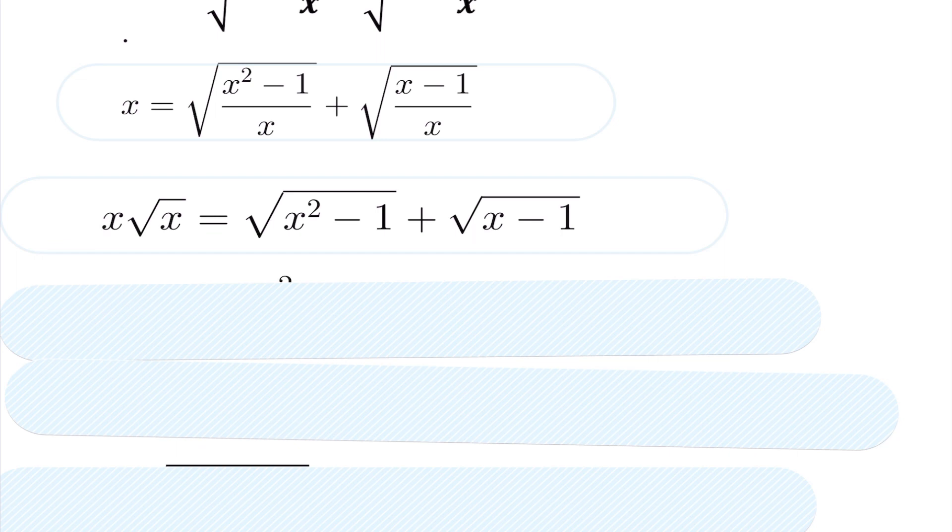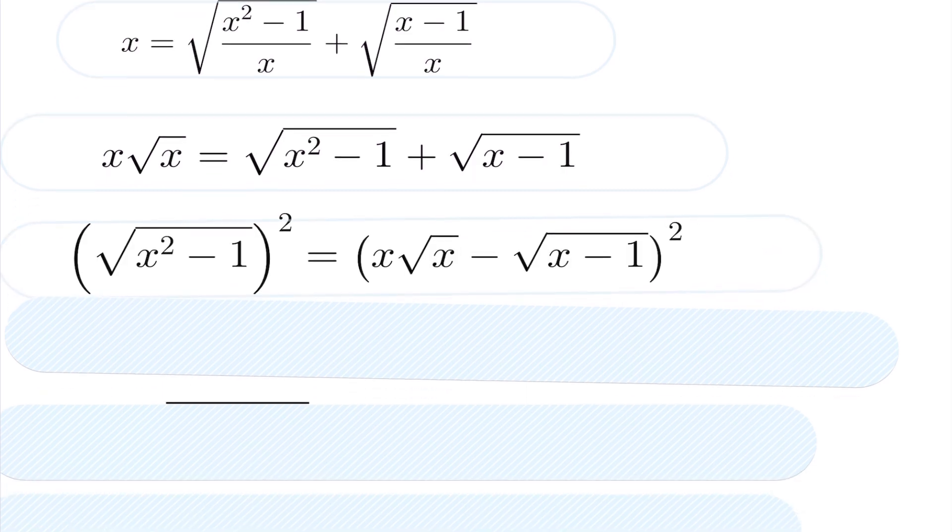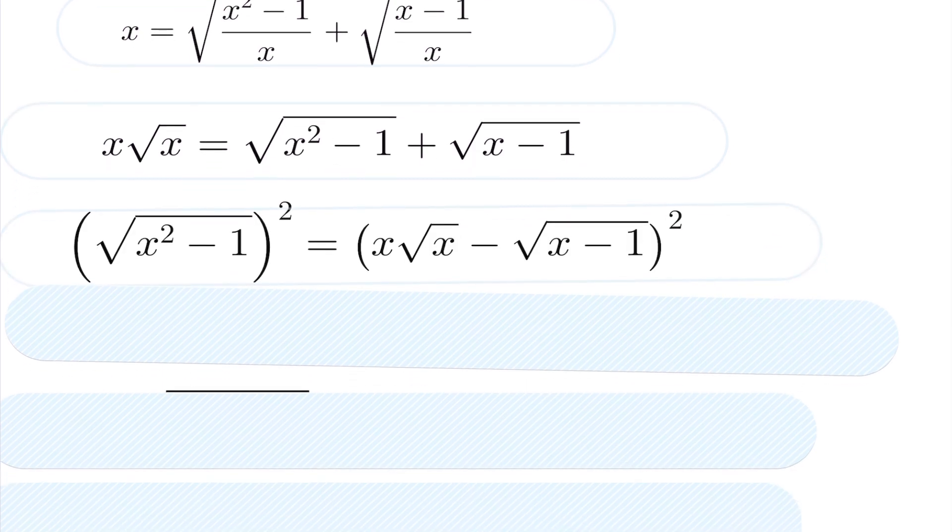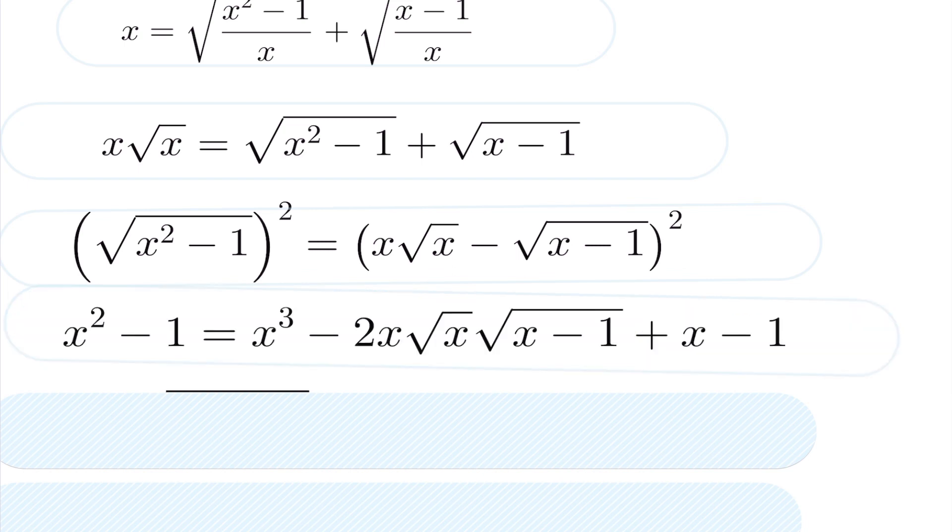Now we're going to isolate for one of these radicals and square both sides. So I'm going to isolate for the square root of x squared minus 1 and square both sides. After I square both sides, we get the following. Again, I've got my left hand side of x squared minus 1. That root will cancel. And then expanding out the expression that we have over here and squaring that, we have the following.